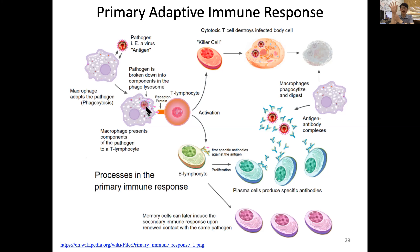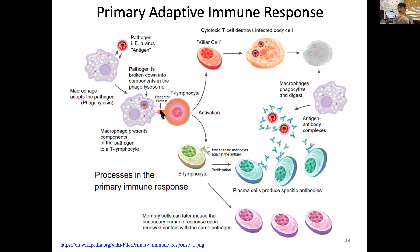The macrophage presents components of the pathogen to the nearby T lymphocyte, or T cell. This can happen in the lymph node. The T lymphocyte has a very specific receptor, and when the key and lock are matching, that specific T lymphocyte will be activated. It will then activate a killer cell and also activate a B cell.